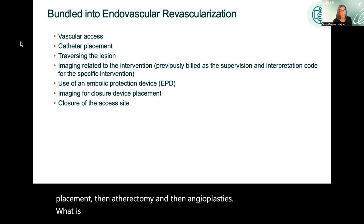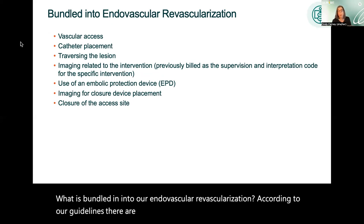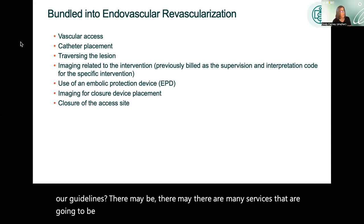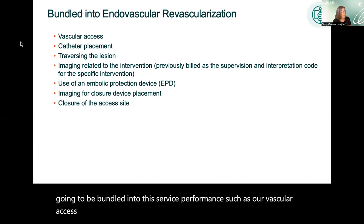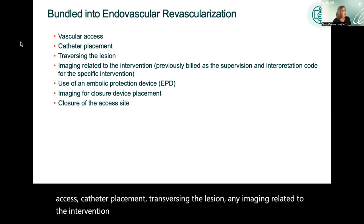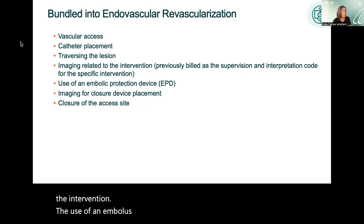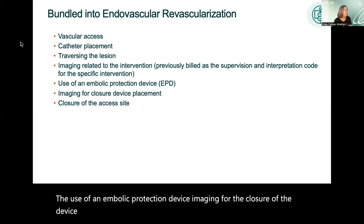Bundled into endovascular revascularization, according to guidelines, are many services: vascular access, catheter placement, traversing the lesion, any imaging related to the intervention, use of an embolic protection device, imaging for closure of the device placement, and closure of the access site.